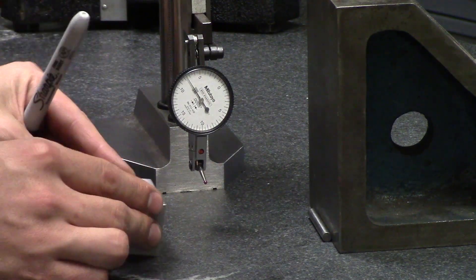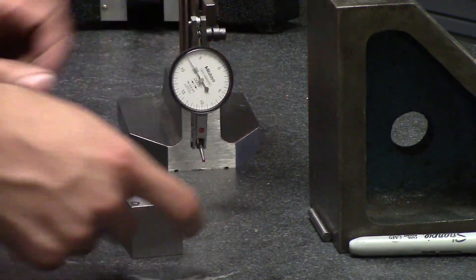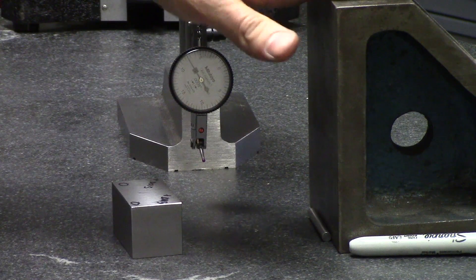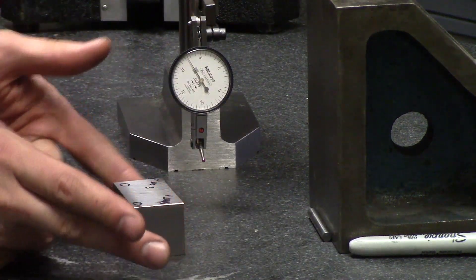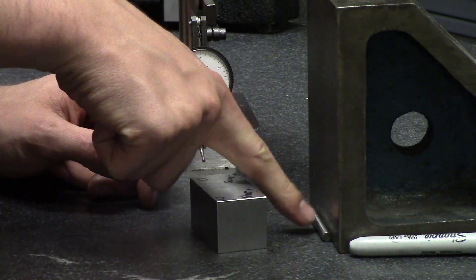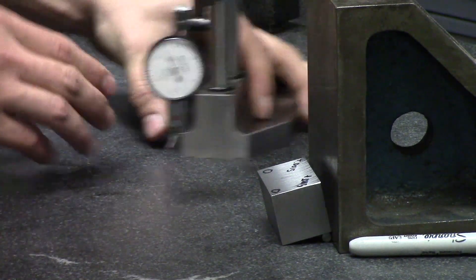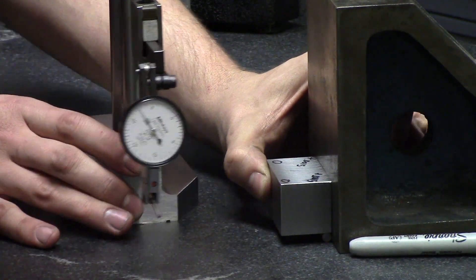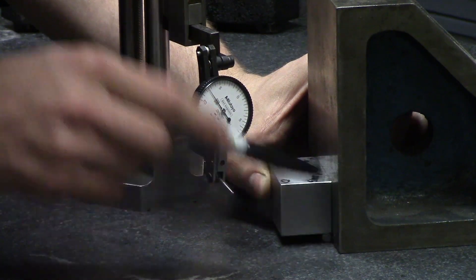So now I have my ground pin and I have my master face which is going to be your ground block so it could be a one two three block, two four six block, as long as it is a ground block for you to rest your part up against. So I'm going to rest my block on top of the gauge pin which is resting up against your master face and then I'm going to take my hand and push it up against the master face resting on top of the gauge pin. All right and this is going to check for perpendicularity of this face to this face.